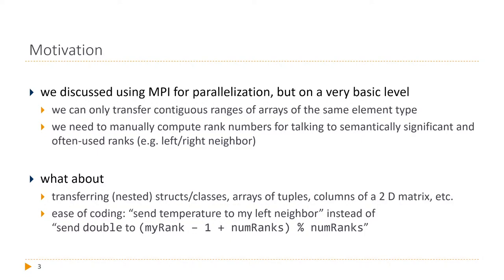The second issue with rank numbers relates to ease of coding. If I need to exchange data with the neighbor left, right, above, or below me, I want to actually specify that. I want to tell MPI I need to talk to whoever is above me. I don't want to compute ranks using modular math formulas. A year later, it's much easier to read 'send temperature to left neighbor' compared to 'send a double value to rank minus one modulo number of ranks,' and then figure out that's actually the left neighbor.